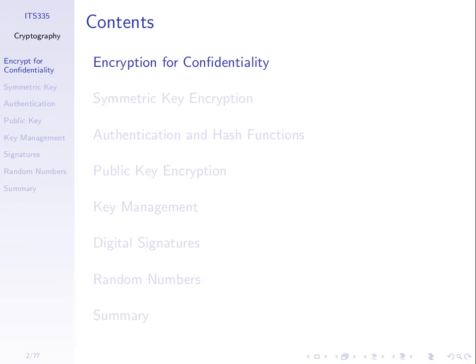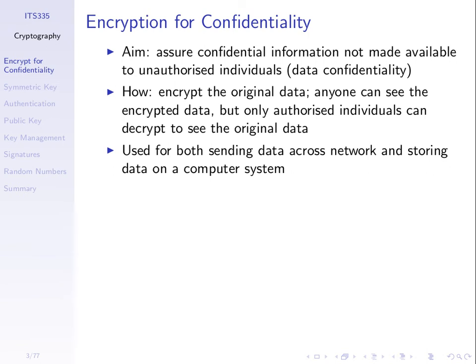How do we do that using encryption? The aim: make sure confidential information is not made available to unauthorized people, unauthorized users. How do we do that? We encrypt the data. We take the original message, encrypt it, send the encrypted form, and the receiver — the intended receiver — should be able to decrypt and get the original message back. But anyone else who gets a copy of that encrypted message should not be able to decrypt and get the original message. That's how we'll achieve it.